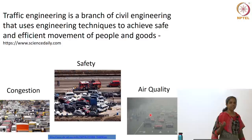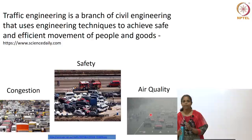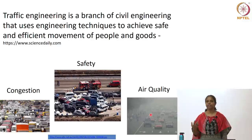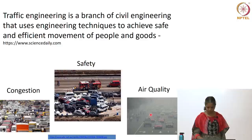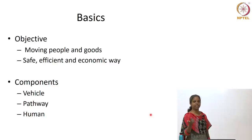It is all about moving people and goods from one place to another. Why do we do this? There are mainly three problems: one is congestion, the second is safety, and the third is pollution or emissions. We have to design the system such that these problems are minimized. The basic objectives you will see in any textbook are safe, efficient, and economic movement of people and goods.